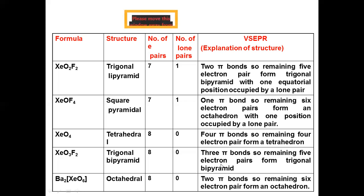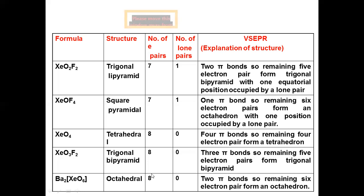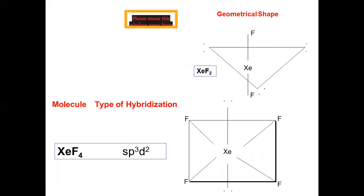Xenon trioxide difluoride (XeO₃F₂) has a trigonal bipyramidal structure with eight electron pairs and no lone pairs; three pi bonds mean five electron pairs form a trigonal bipyramid. Barium perxenate has an octahedral structure with eight electron pairs and no lone pairs; two pi bonds mean six electron pairs form an octahedron.